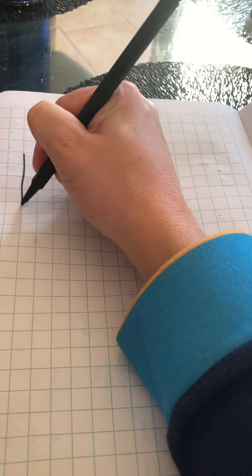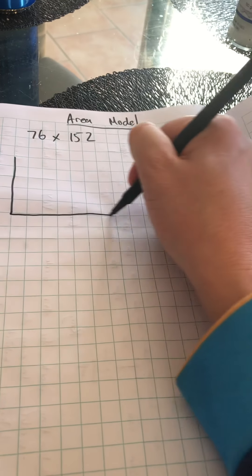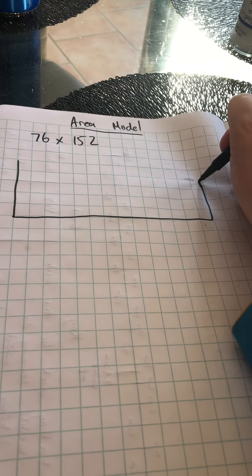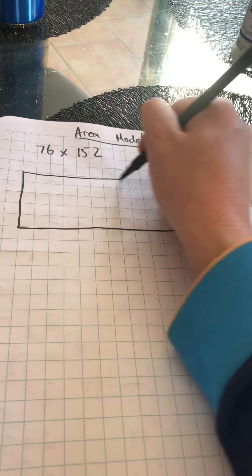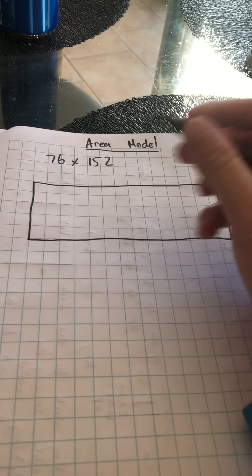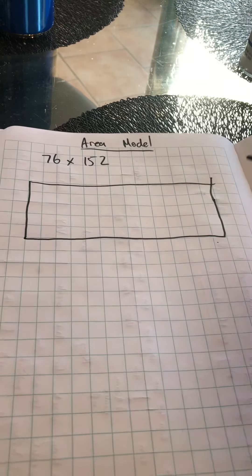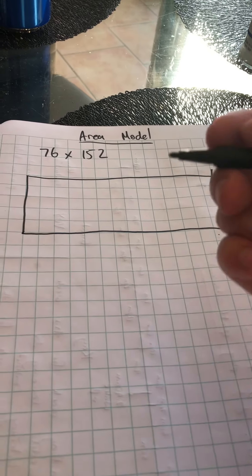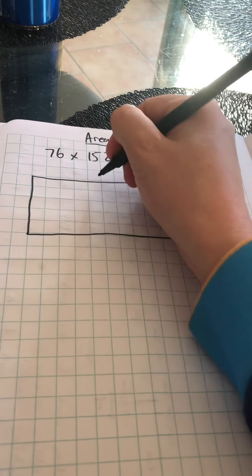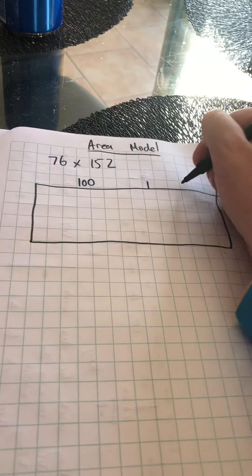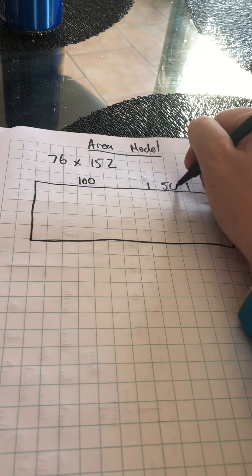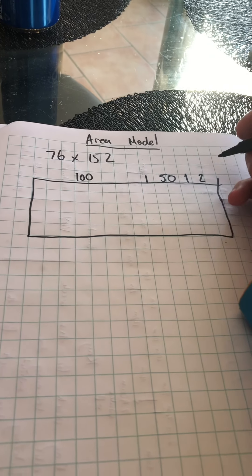When we do the area model, the first thing that we need to do is make a rectangular shape like this. Along this long side here I'm going to use the larger number which is 152 and I'm going to split it up into its place value like this. So this part here is going to represent 100, this part here represents 50, and this part here represents 2.